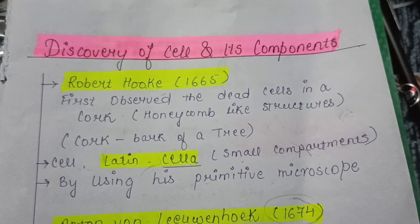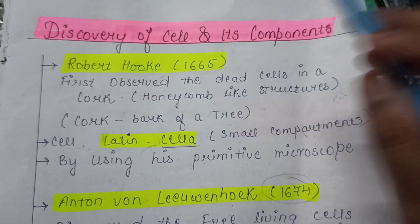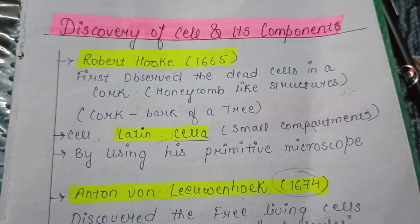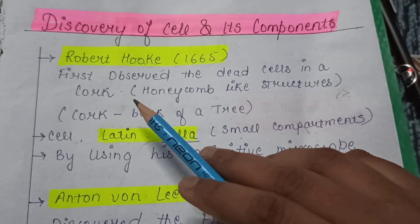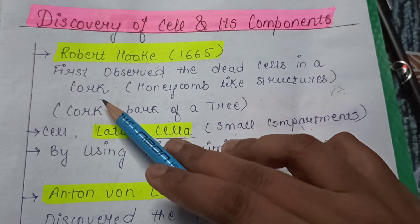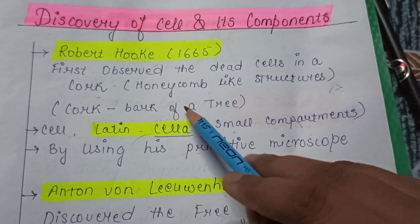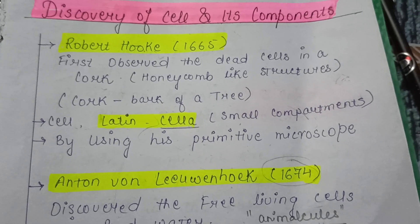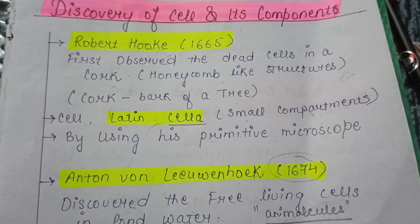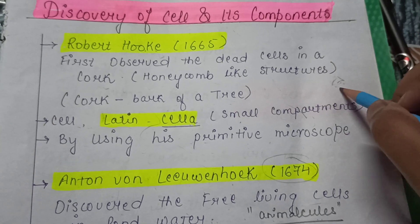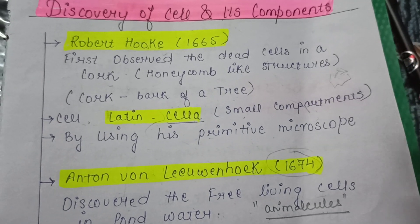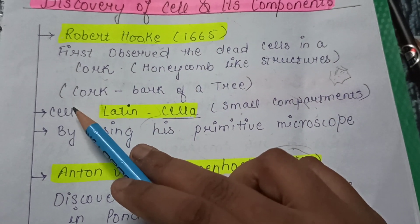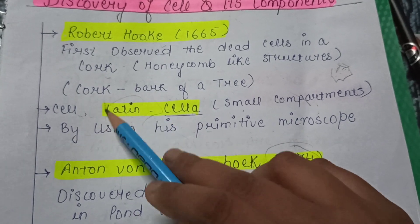The first topic is the discovery of the cell. The first name we observe is Robert Hooke, a scientist who observed a thin slice of cork. Cork is a substance obtained from the bark of a tree. Robert Hooke saw that the cork resembled a honeycomb-like structure, and he named these structures as 'cell.'